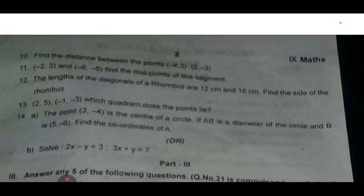Twelfth one: length of the diagonals of a rhombus are 12 cm and 16 cm, find the side of the rhombus. Thirteenth one: (2, 5), (-1, -3), which quadrant does the point lie? Fourteenth one: the point (3, -4) is the center of the circle. If AB is the diameter of the circle and B is (5, -6), find the coordinates of A.